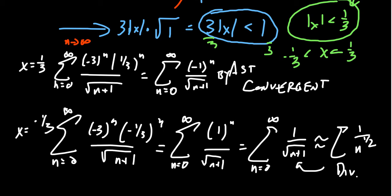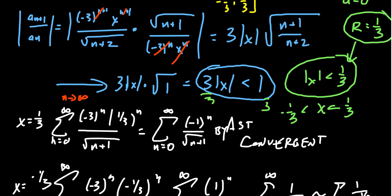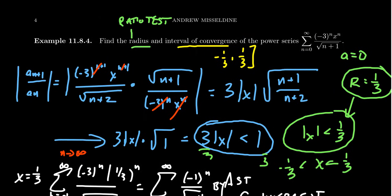Since x = -1/3 diverges, we use a parenthesis on that side. Our interval of convergence is (-1/3, 1/3], where 1/3 is included but -1/3 is not. Most calculations for radius and interval of convergence will look very similar to this example.